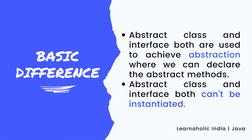The basic difference between abstract class and interface is that both are used to achieve abstraction, where we can declare the abstract methods. Abstract class and interface both can't be instantiated. But there are many differences between abstract class and interface that are given below.